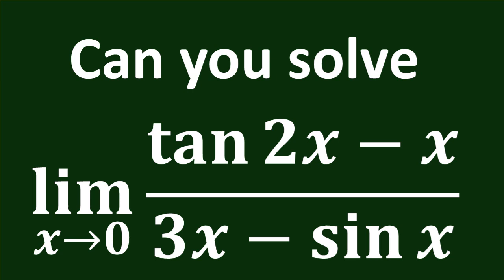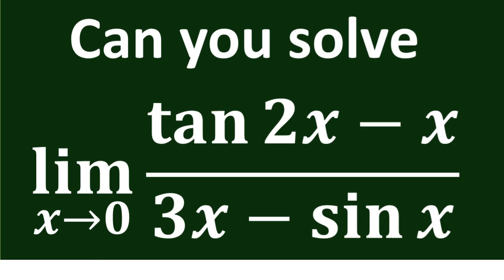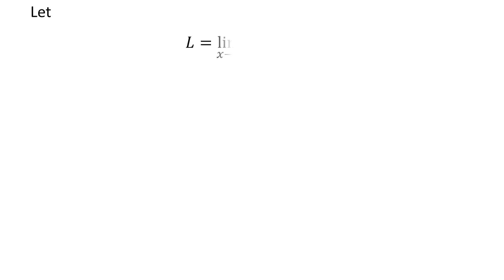In this video, we will learn to find the limit of tangent of 2 times x minus x upon 3 times x minus sin of x as x approaches 0. Let us assume L is the limit of tangent of 2 times x minus x upon 3 times x minus sin of x as x approaches 0.